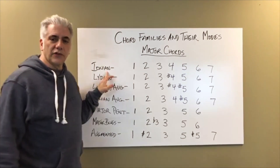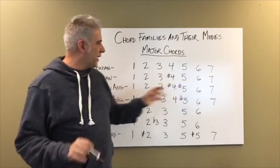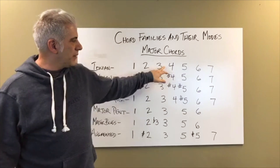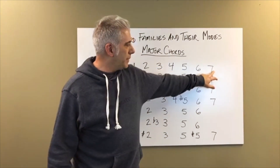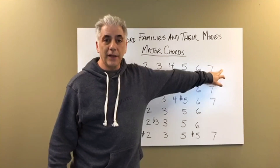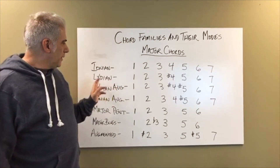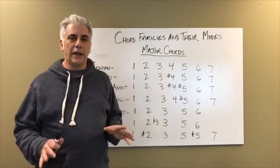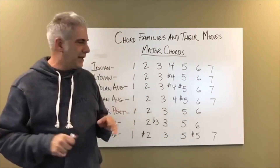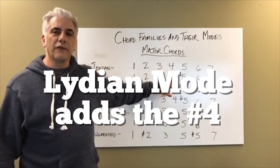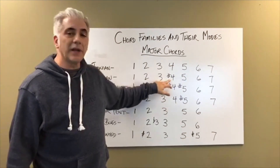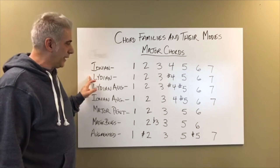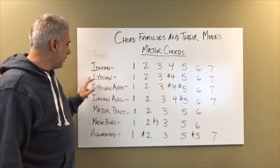We have the Ionian mode here to start. We're going to call it 1 through 7. In C major we have C, D, E, F, G, A, B. Between E and F is a half step, and between B and C — number 8 or number 1 again — is a half step. The second mode is the Lydian mode. There is only one note that is different between Lydian and Ionian, and that is the sharp 4 — the fourth scale degree. In C, F would become F sharp. F sharp is added to make it a C Lydian scale. The fourth is raised.